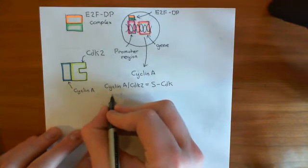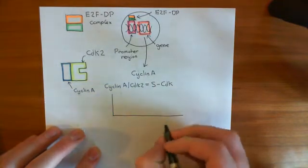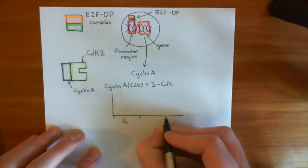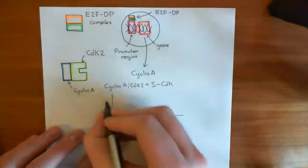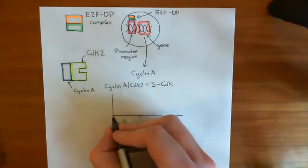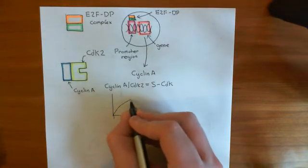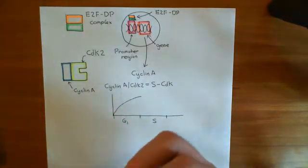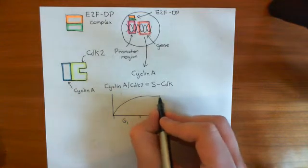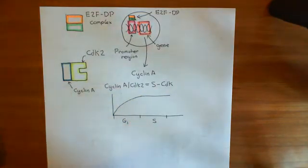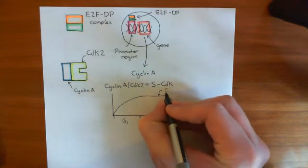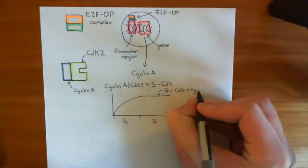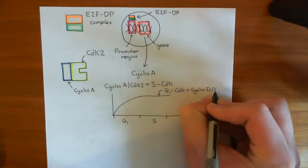And now if we extend this graph of the different levels of the cyclin-dependent kinases as time goes by. This is the G1 phase, this is the S phase of the cell cycle, and this is the level of CDK on the y-axis. Then what we saw was that as G1 progresses, the level of the cyclin-D CDK4 complexes, or the G1 CDK, goes up. And in fact, this remains high throughout all of S phase. So this graph here represents the G1 CDK, or cyclin-D CDK4 complexes.